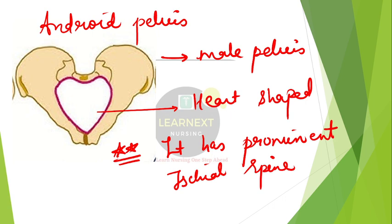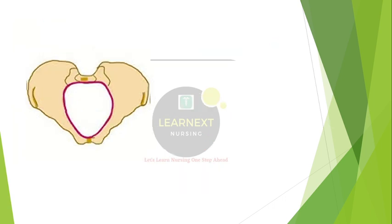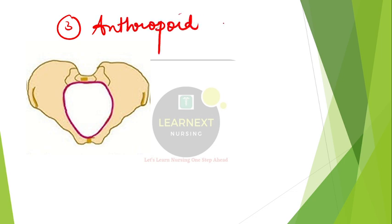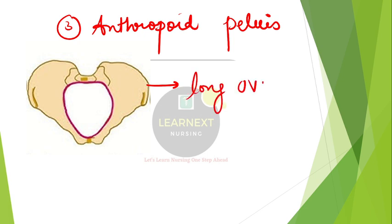The third type of pelvis is the anthropoid pelvis, which is called an abnormal pelvis. The shape of the pelvic brim is long oval. The anthropoid pelvis also has blunt ischial spines.